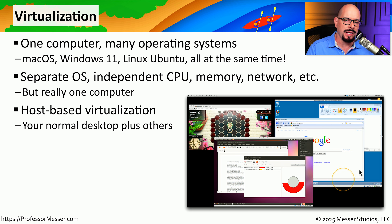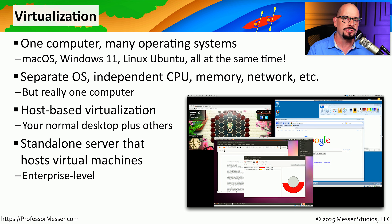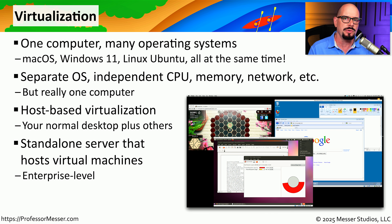This means you're running something like macOS as the primary operating system, and then virtualizing other operating systems on top of that. In an enterprise environment, we tend to use a single computer that has multiple operating systems running on it in a virtualized form — there is no desktop to choose from. Instead, you have a single device that has multiple VMs running on that single computer.